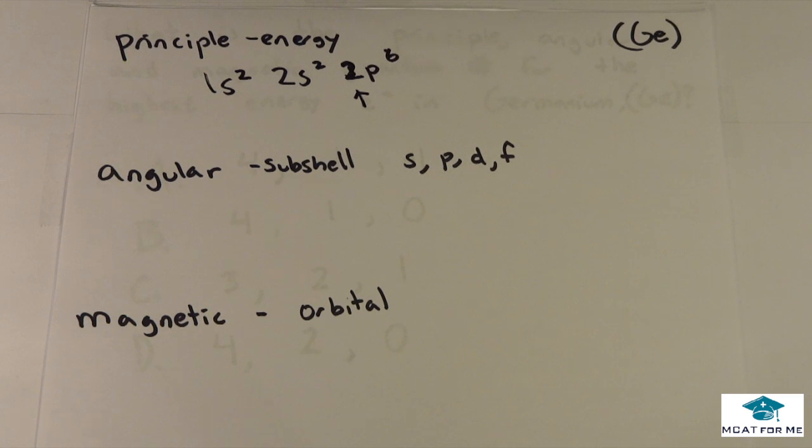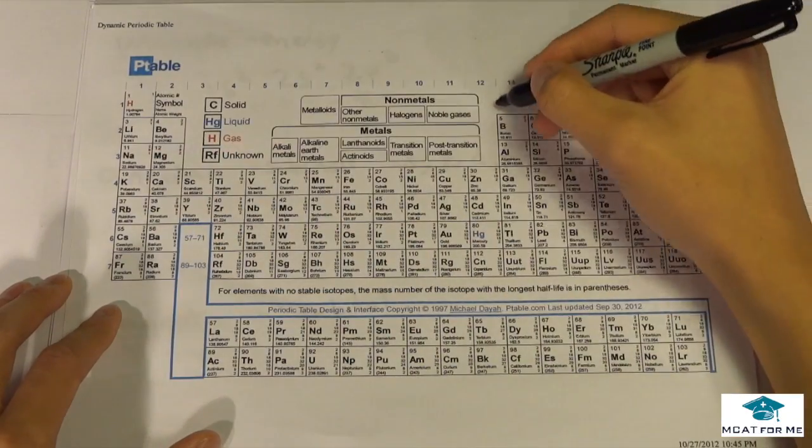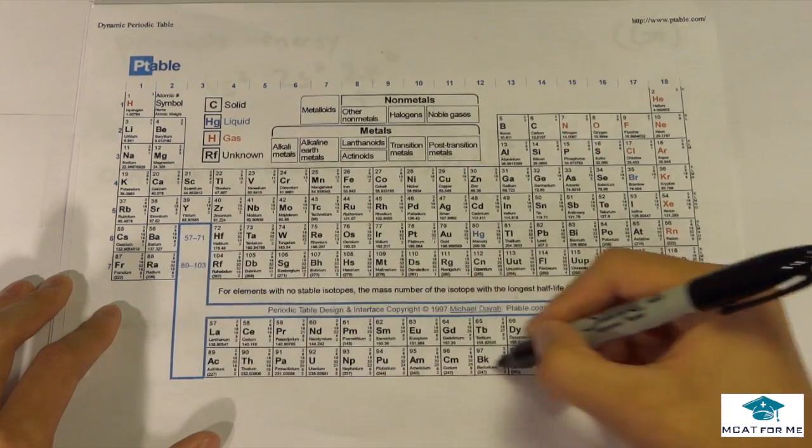The angular quantum number is the subshell. So is it in the s, the p, the d, or the f? So s is this block right here, p is this block right here, d is this block right here, and f is down here.